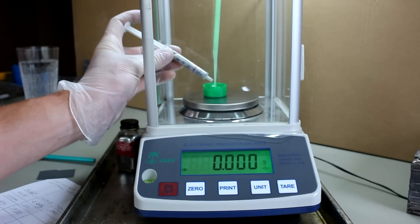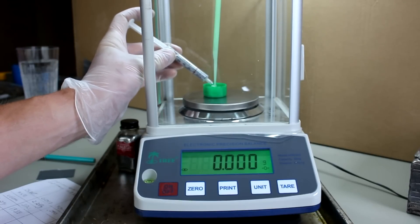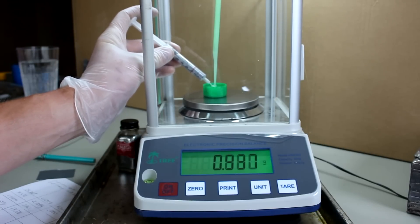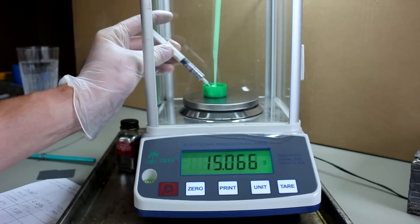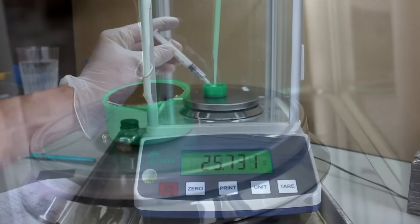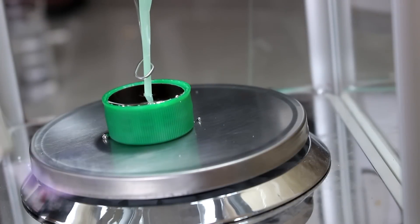So here it is the densest room temperature liquid known to man, mercury. Well I suppose mercury with gold dissolved into it would be slightly heavier. So now that I've got the straw positioned inside the mercury I'm going to tare that to weight.